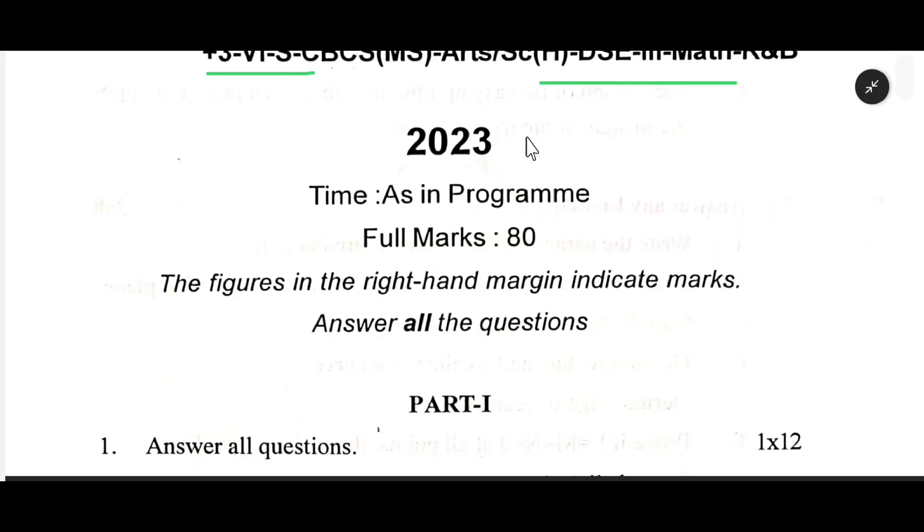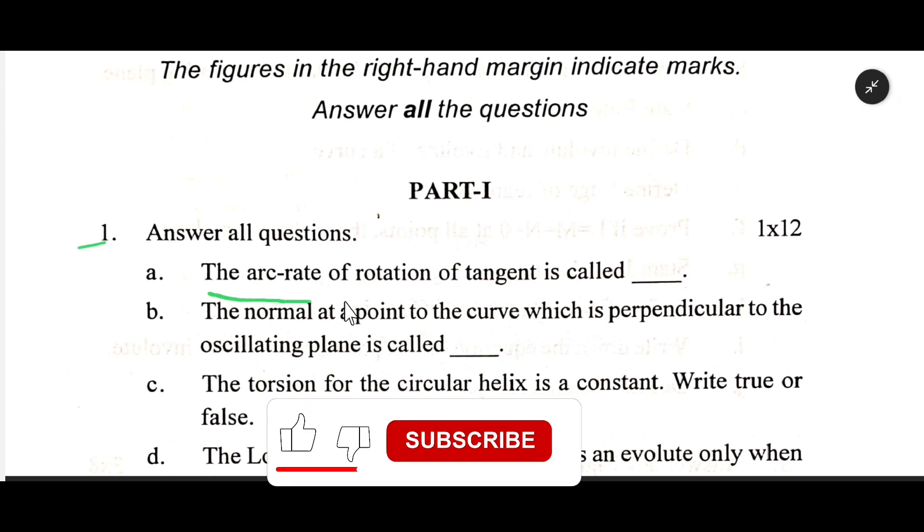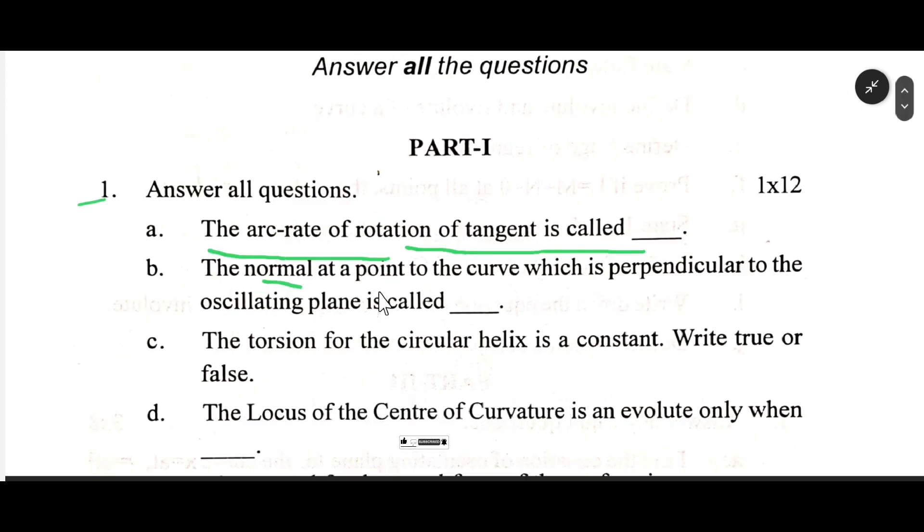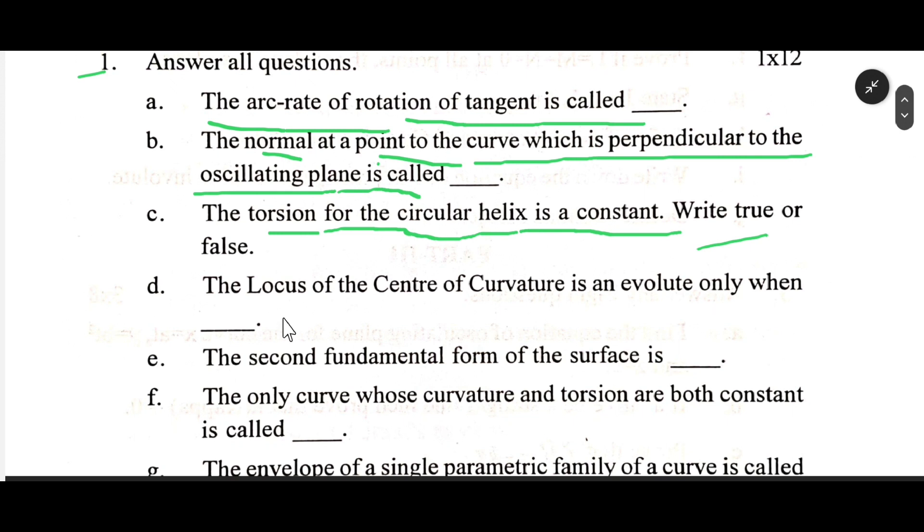DSC3 Math, sixth semester. Part 1, number one. The arc-rate of rotation of a tangent is called dash. The normal at a point to the curve which is perpendicular to the oscillating plane is called dash. The torsion for the circular helix is a constant - true or false. The locus of the center of curvature is an evolute only when dash.